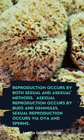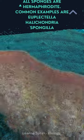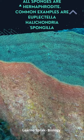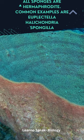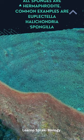Asexual reproduction occurs by buds and gemmules. Sexual reproduction occurs via ova and sperms. All sponges are hermaphrodite. Common examples of sponges are Euplectella, Halichondria, and Spongilla.